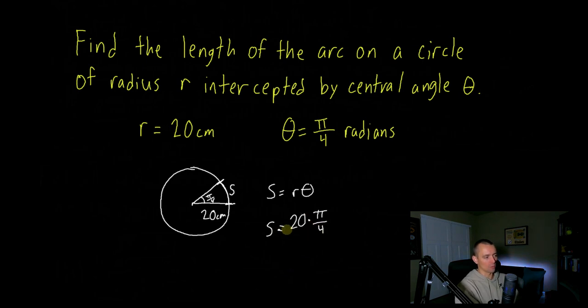We can simplify this from here. 20 and the 4 cancel and leave us with 5 times π, so s equals 5π, which is measured in the same units as your radius. So this is 5π centimeters.